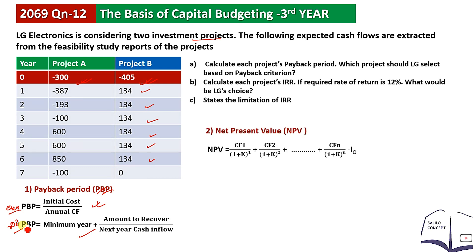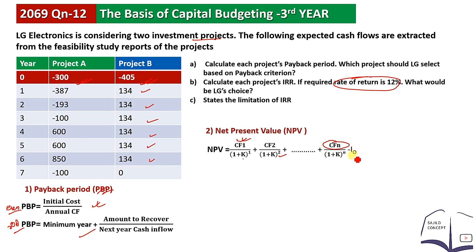NPV is calculated by discounting each year's cash flow. The formula is: cash flow of Year 1 divided by (1+k), plus cash flow of Year 2 divided by (1+k)^2, continuing through to cash flow of Year n divided by (1+k)^n, minus I0, the initial cost of investment.